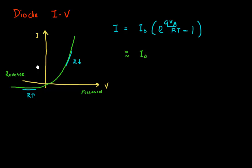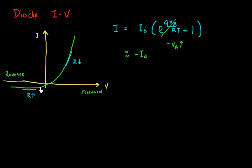This IV relationship is true for a large part of the range of operation of voltage. But what happens if you apply a very large negative bias — a very high reverse voltage? This IV relationship as given by this formula: if I apply a very large negative voltage, this exponential term should be very negligible, and my current should be essentially equal to minus I-naught. And that, in fact, holds for a large range of voltage.